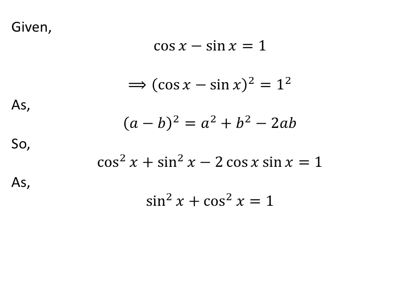We know the famous trigonometry identity: square of sine of x plus square of cosine of x is equal to 1. Applying this identity gives us: 1 minus 2 times cosine of x times sine of x is equal to 1.